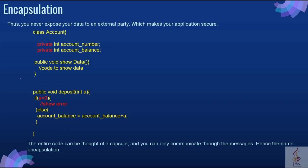Therefore, you never expose your data to an external party, which makes your application secure. As you can see, this entire code is like a capsule, and you can only communicate through the messages — hence the name, encapsulation. If you want to achieve a lesser degree of encapsulation, you can use modifiers like protected or public. With encapsulation, developers can change one part of the code easily without affecting the other.